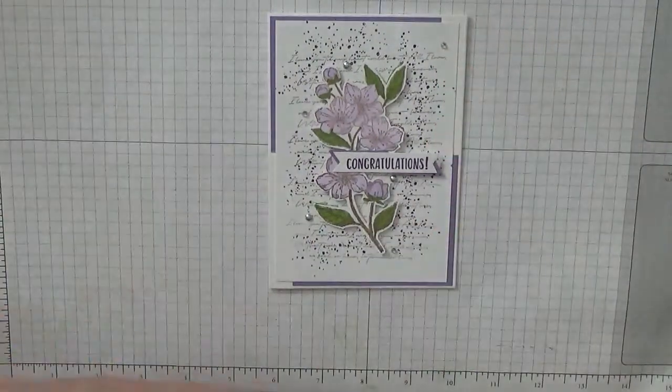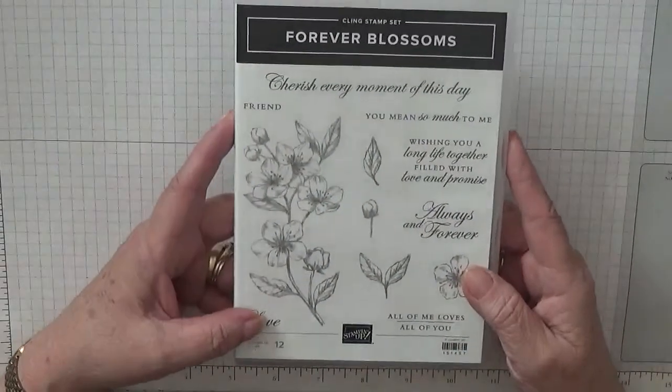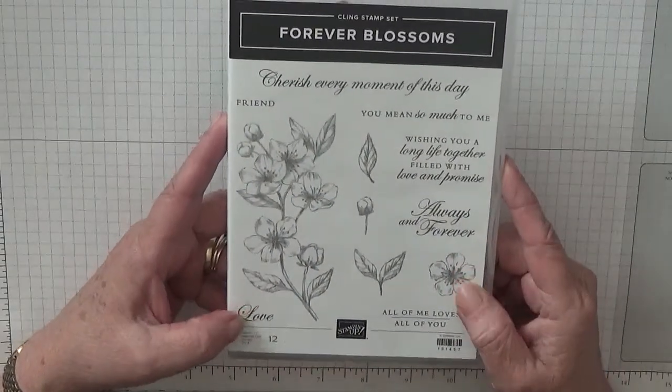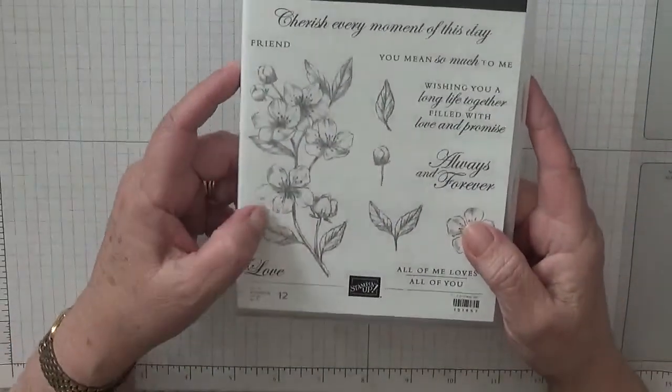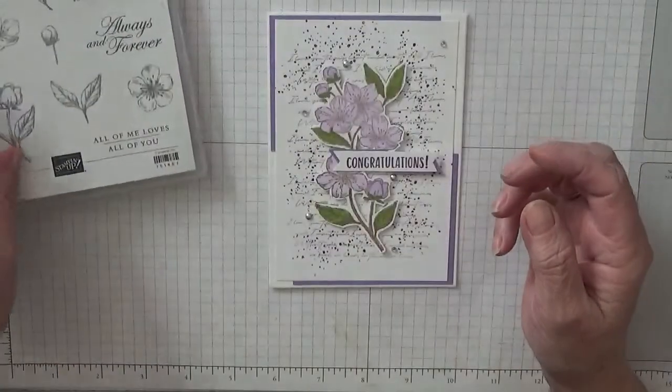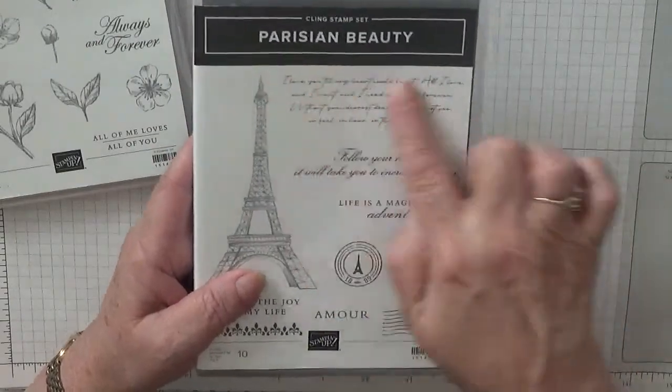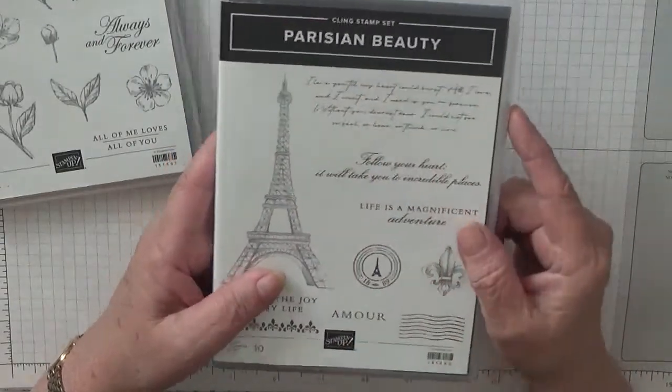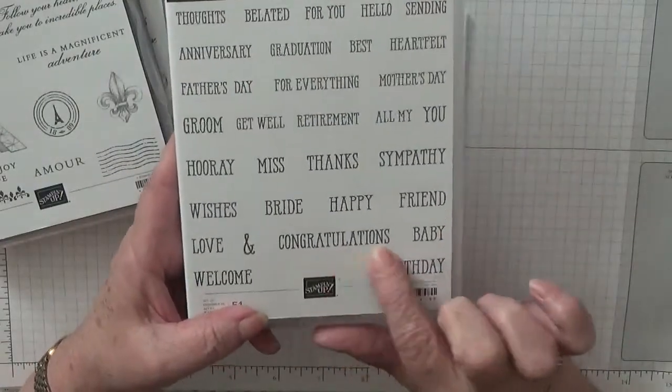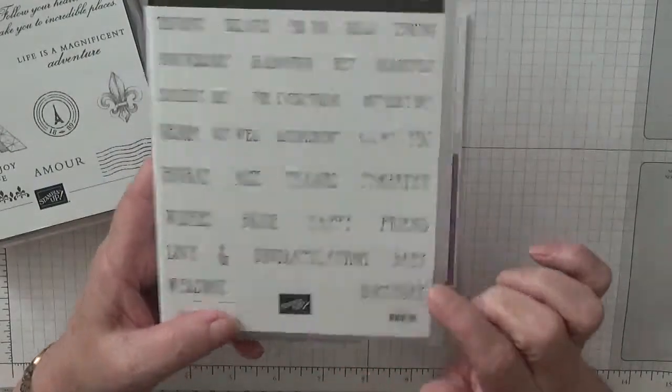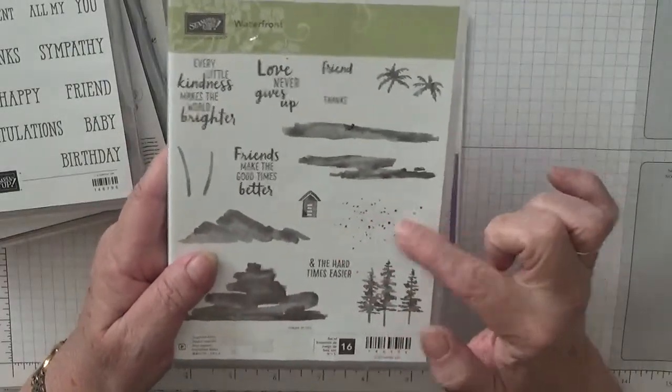To make this card I used the stamp set Forever Blossoms, which is in the new Spring and Summer catalogue. I also used Parisian Beauty for the script, Well Said for the word Congratulations, and Waterfront for the Splatter Dots.